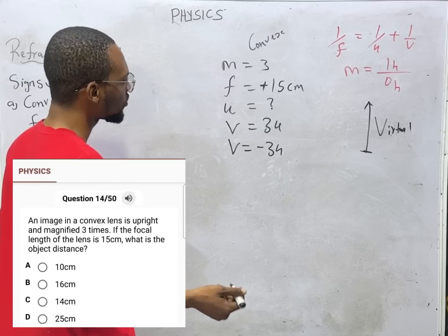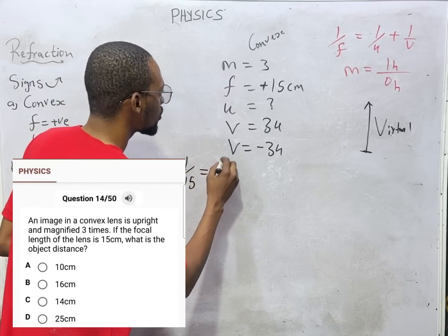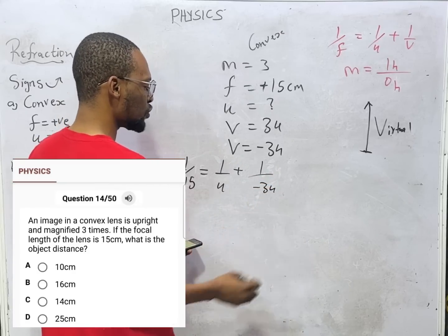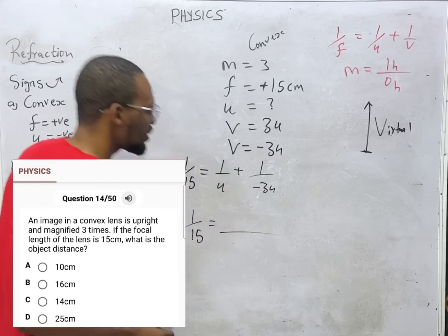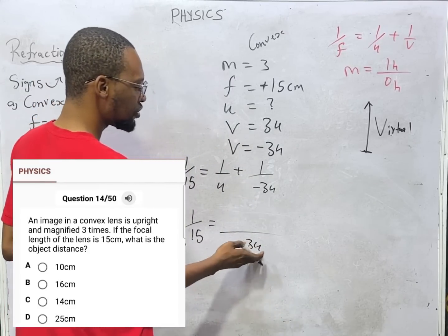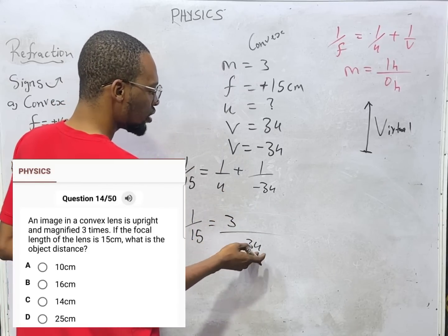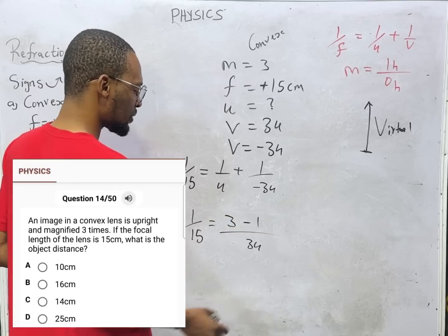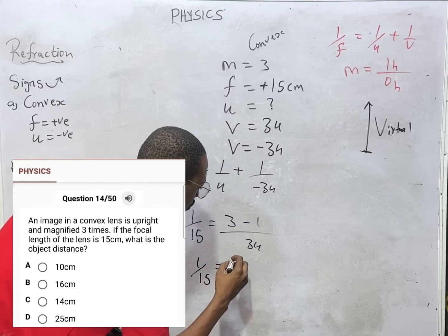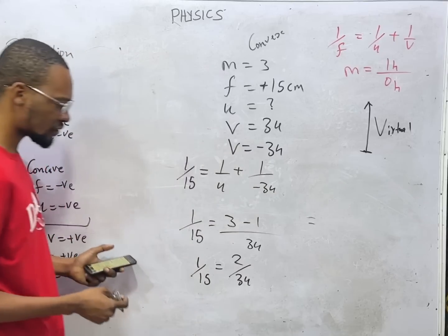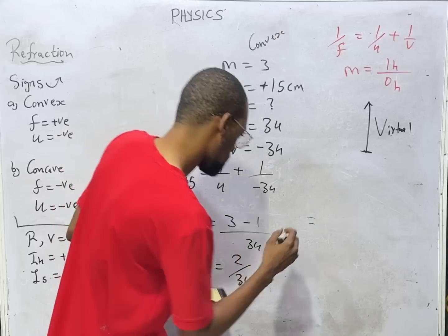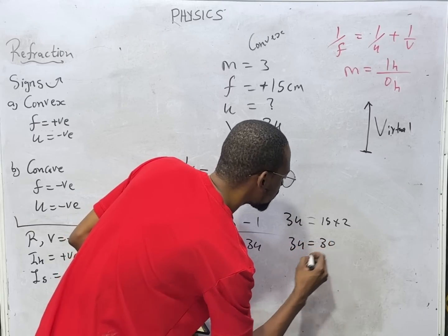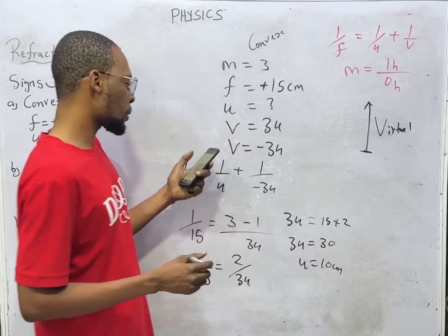From here, one over F which is 15 equals one over U plus one over V. Instead of V we are taking minus three U. That's one over U plus one over minus three U, which is one over U minus one over three U. One over 15 equals two over three U. This gives you three U equals 15 times two. Three U equals 30, U equals 10 centimeter.